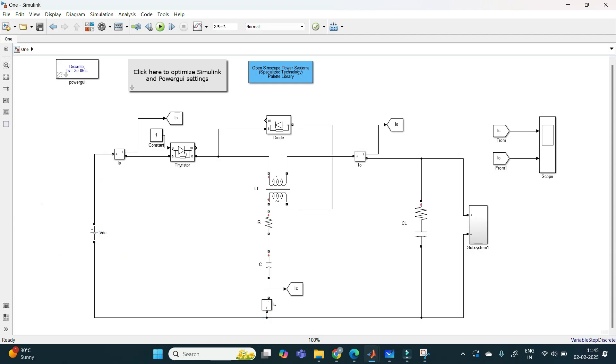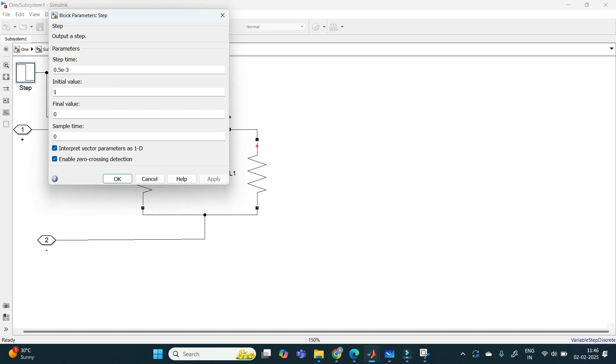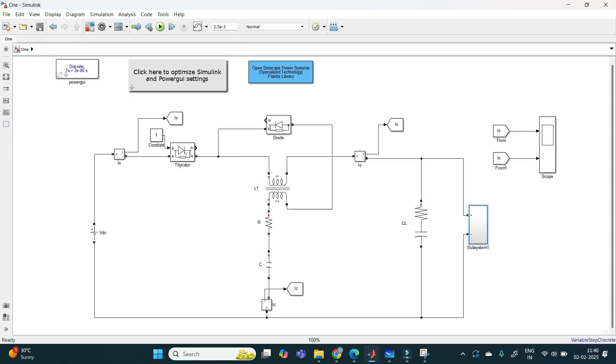First, we need to take the DC source because our circuit is DC circuit breaker. And we need to take the SCR and also coupled inductor along with the diode, resistor and capacitor connected to the load. This subsystem contains the load. Here I am giving the step change. Let's see how this step change will identify our circuit breaker. Now, just run the simulation diagram.